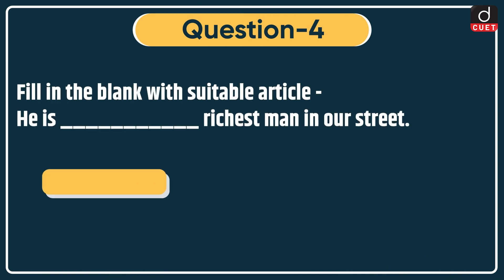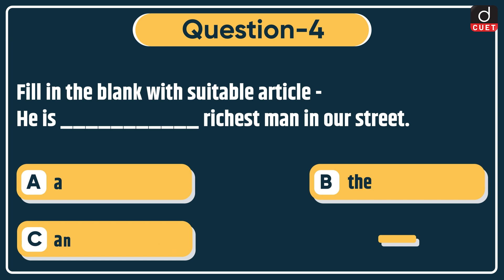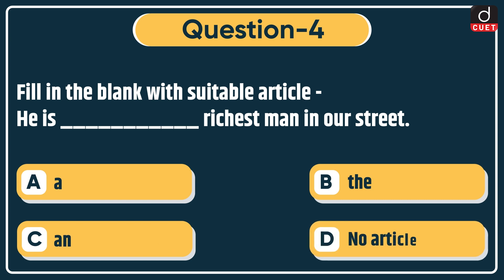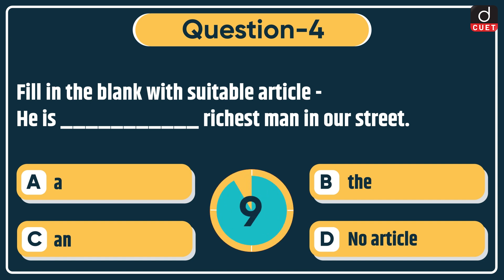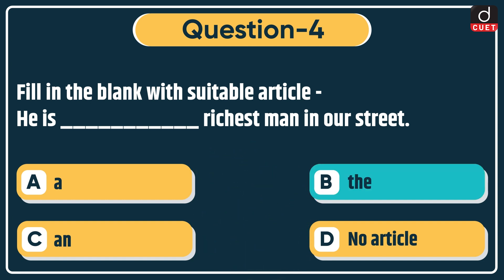Next question: fill in the blank with a suitable article. 'He is dash richest man in our street.' Options: a, the, an, or no article. The correct answer is option B: the.